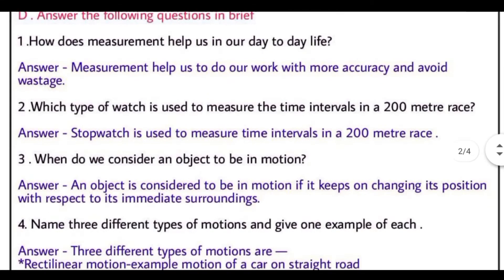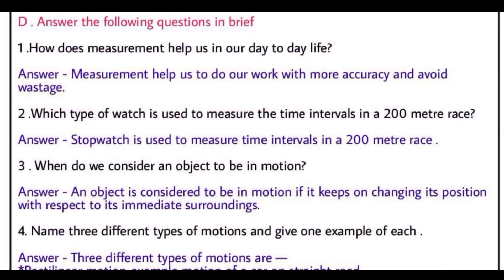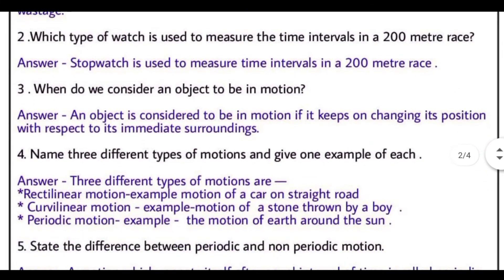Answer the following questions in brief. How does measurement help us in our day to day life? The answer is, measurement helps us to do our work with more accuracy and avoid wastage. Second is, which type of watch is used to measure the time intervals in a 200 meter race? The answer is, stop watch is used to measure time intervals in a 200 meter race. Chhote samay antral ko aapne ke liye, stop watch ka use kiya jata hai.